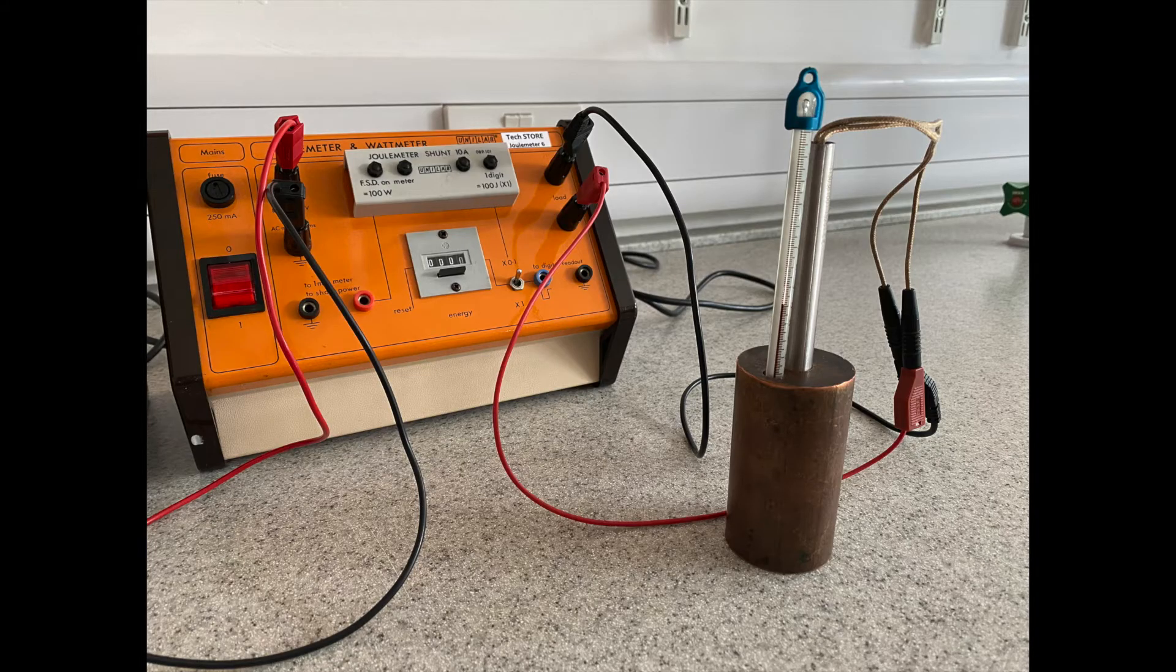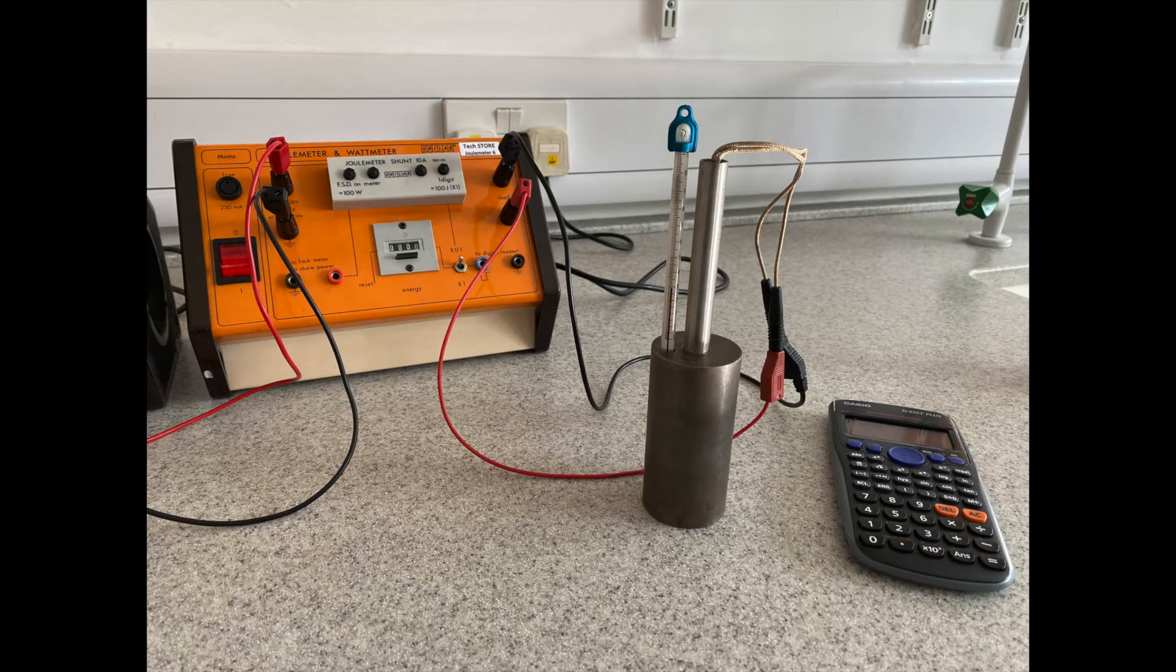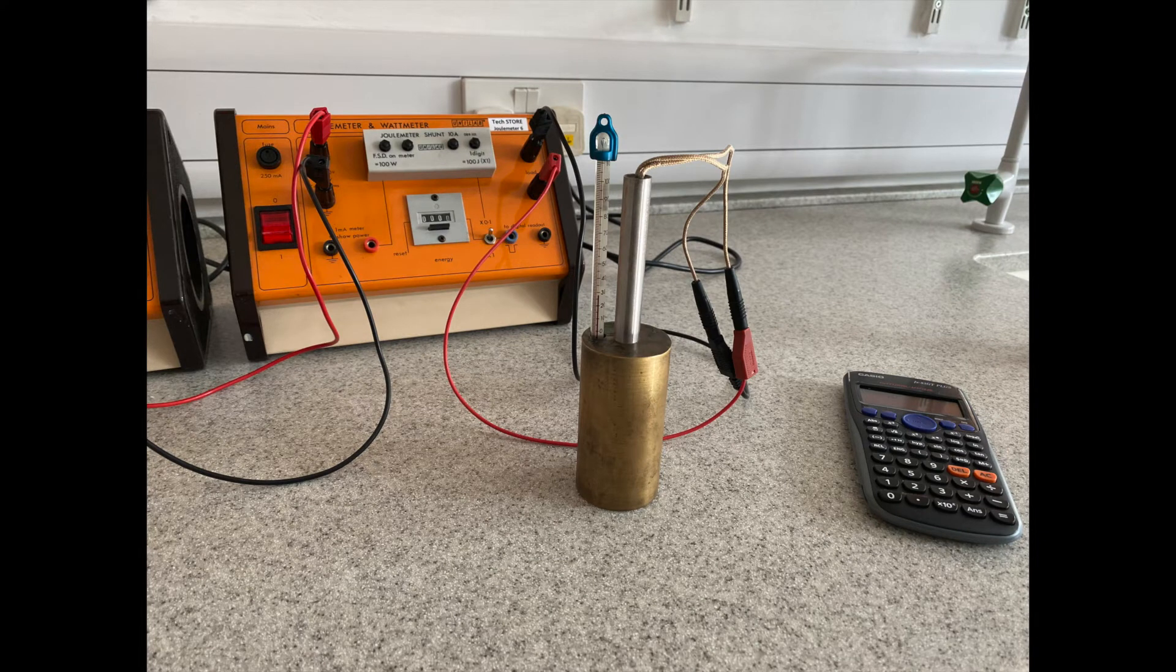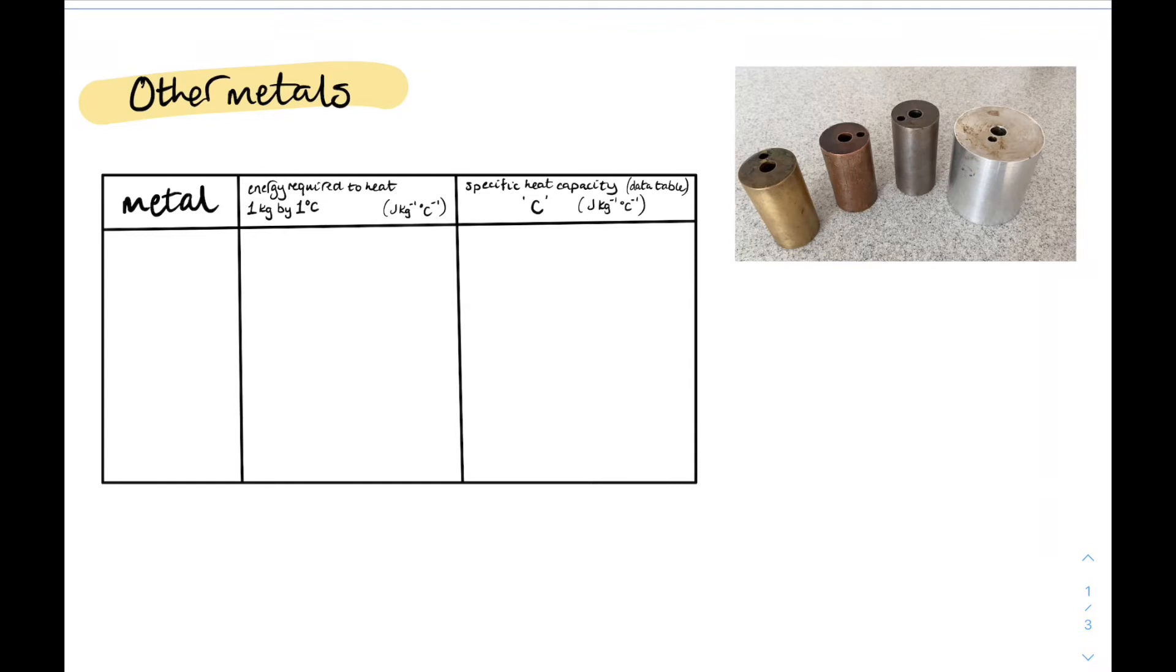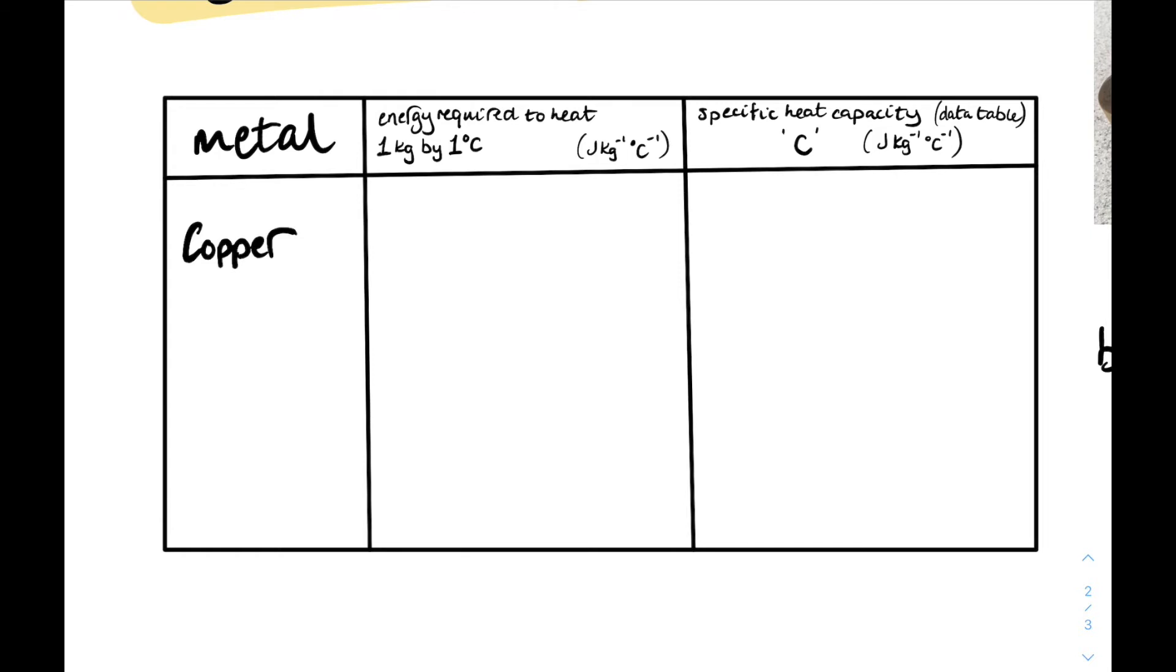Now the same experiment was repeated with copper and with the iron and with the brass. And here's the results we got. We did brass and copper and iron. And we've just done aluminium. They're all 1 kilogram. Now they're different sizes because they've got different densities.